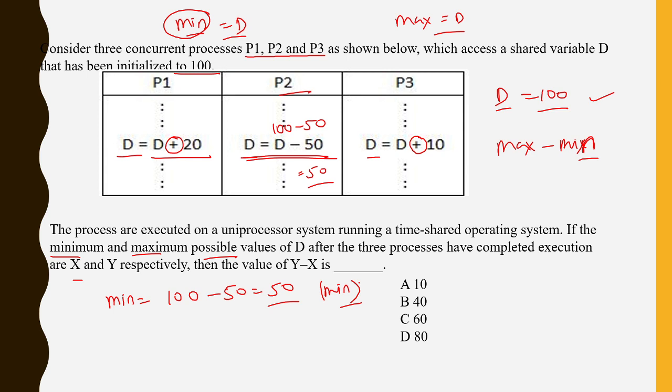Now come to the maximum possible value. In which sequence can you get maximum? Think easily. Think easily what is the sequence to get maximum. Maximum possible value will be only possible when I am increasing the value. So who are increasing the value? P1 is also increasing, P3 is also increasing.